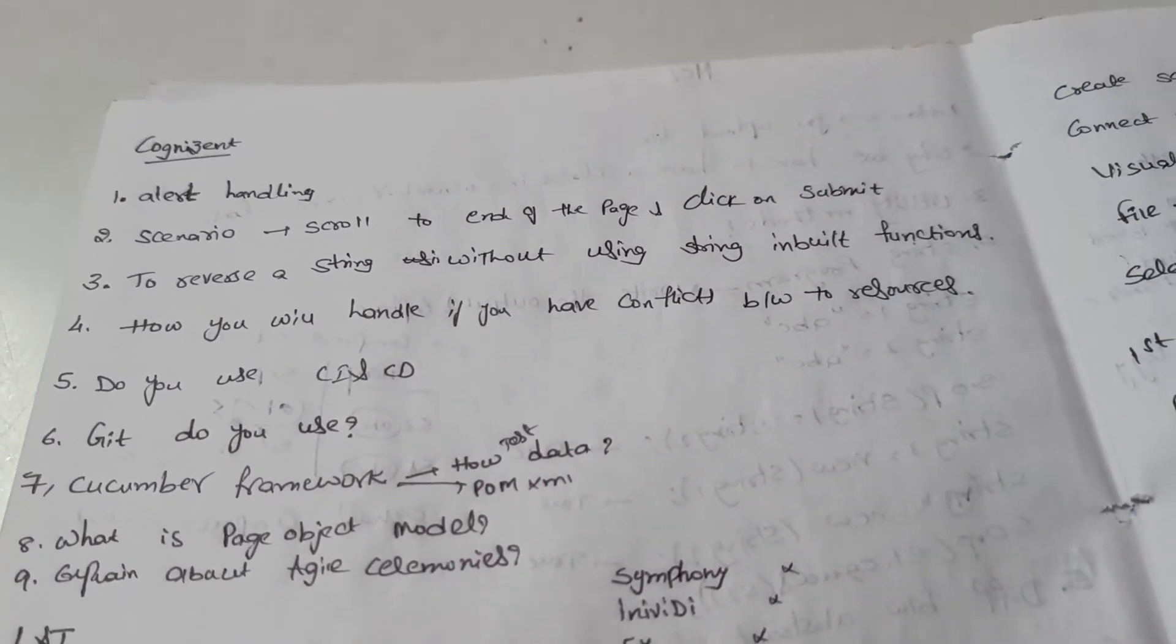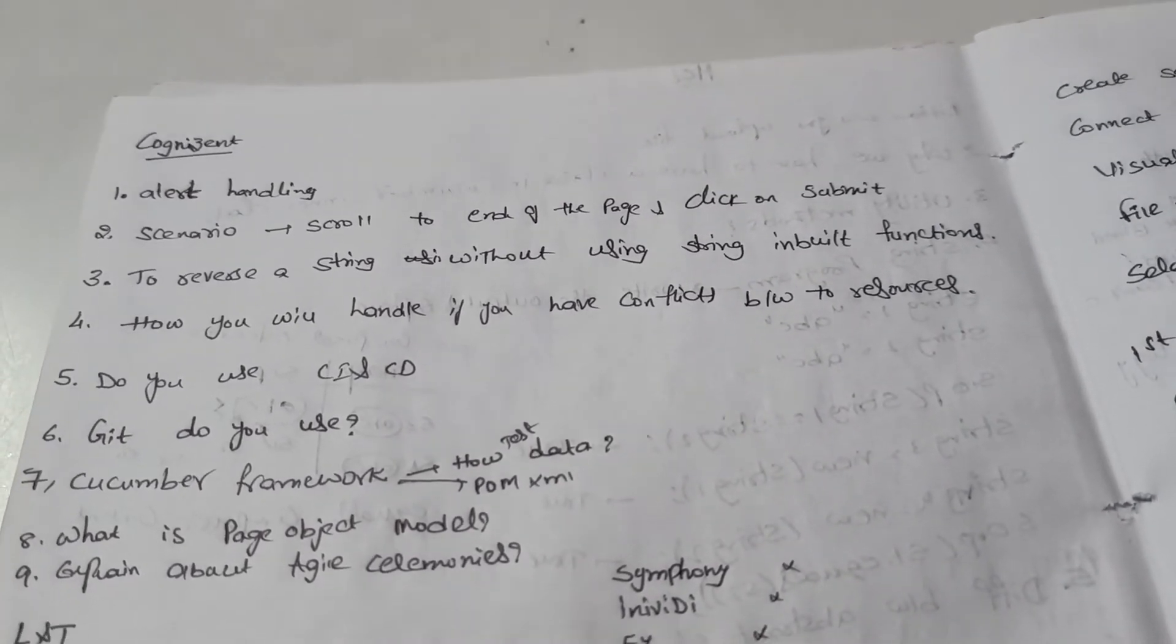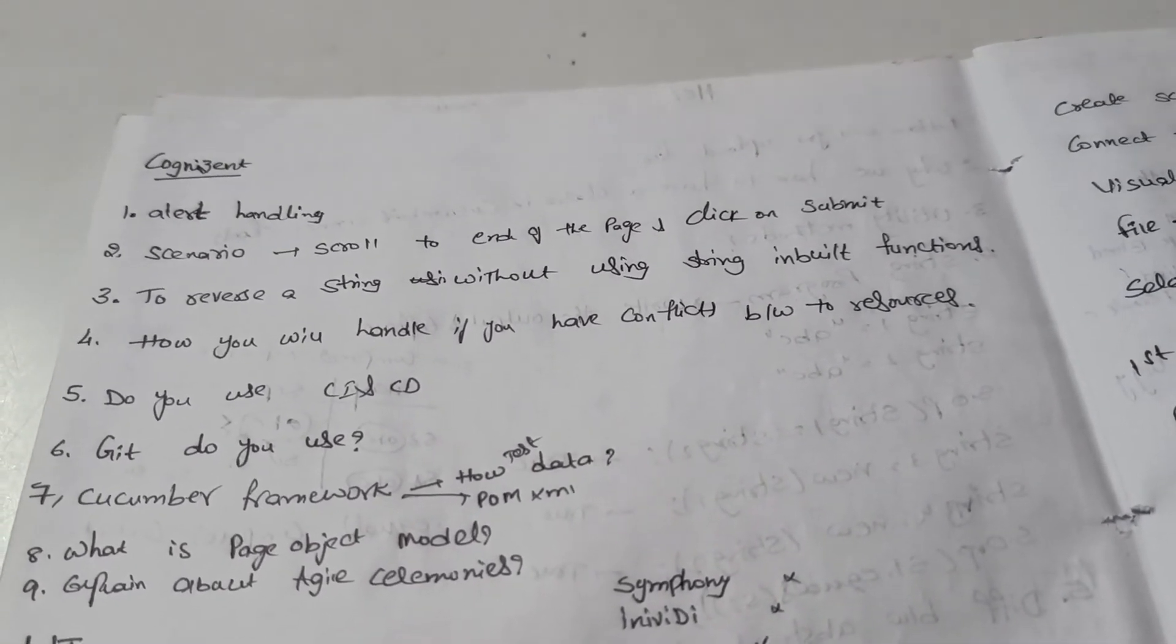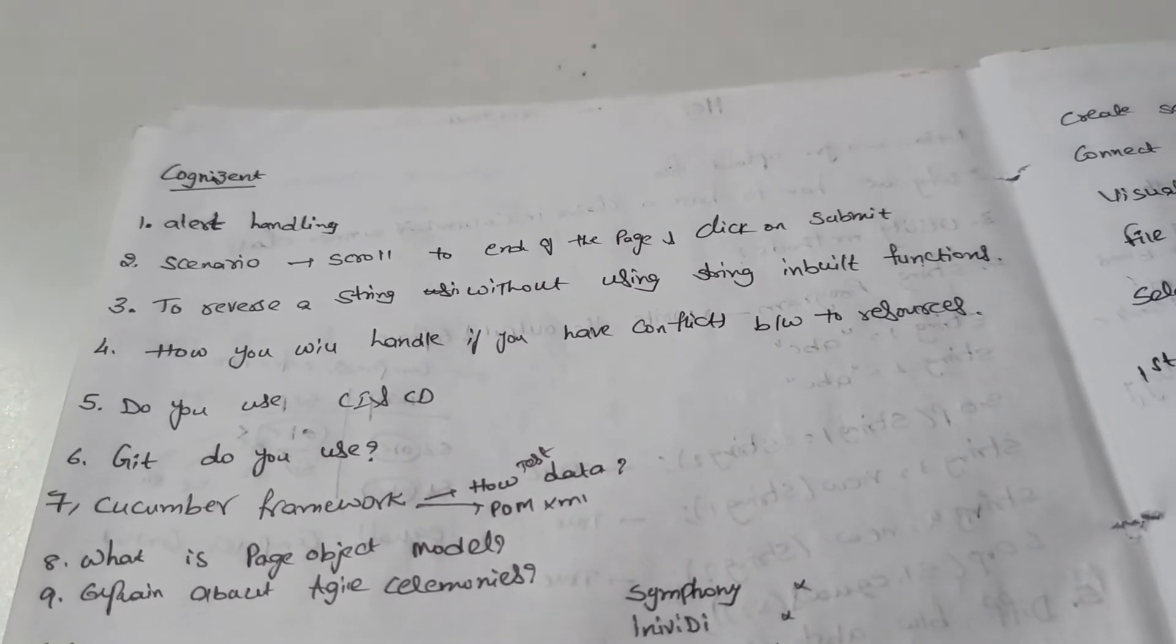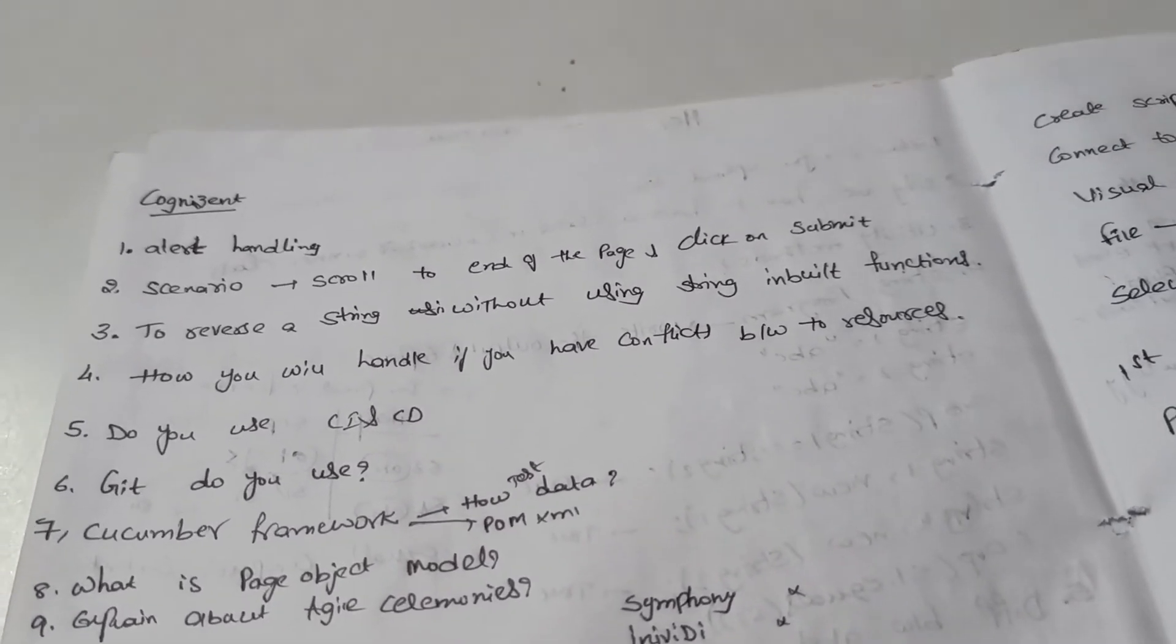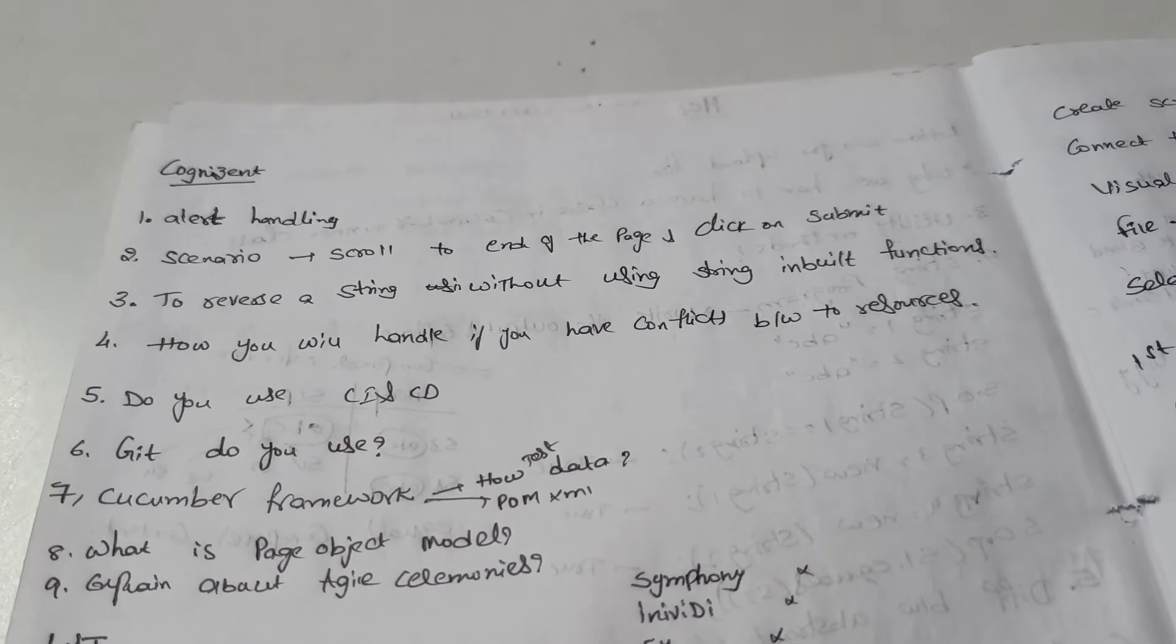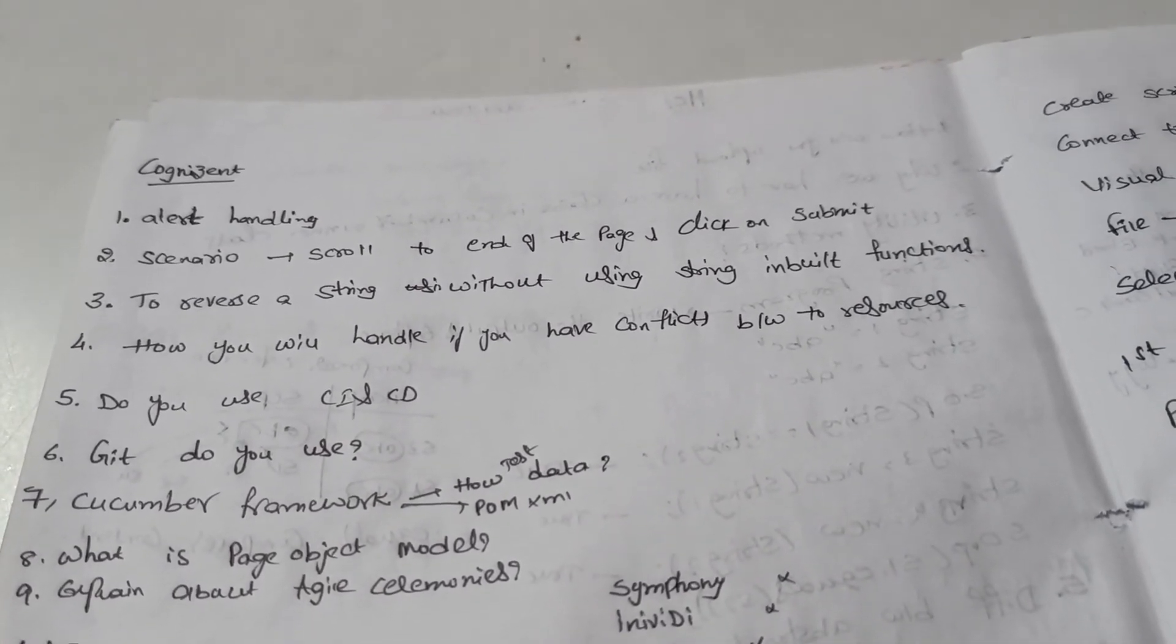They asked me to explain what version controller I'm using, so I explained about GitLab. The seventh question is Cucumber framework questions - framework-dependent questions. They asked how you will store the test data in your framework and also explain about the pom.xml and list of dependencies.